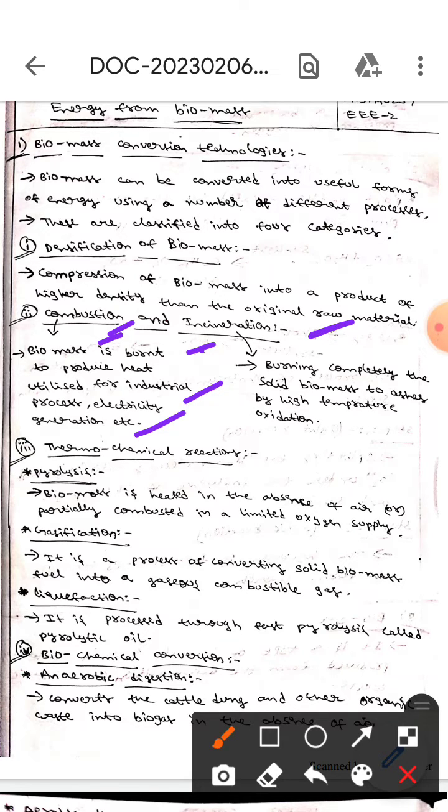The next one is incineration - here, burning completely the solid biomass to ash by using high temperature oxidation.